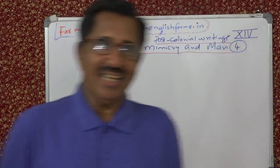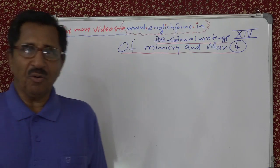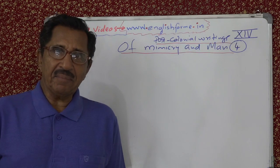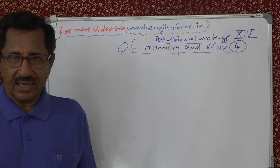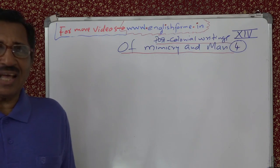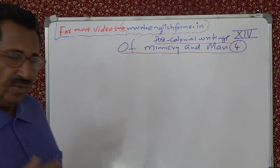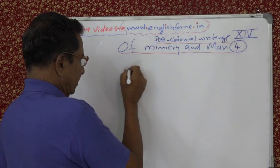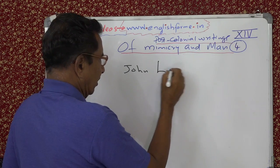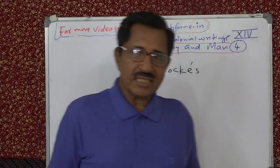Hello friends. So, 'Of Mimicry and Man' by Homi K. Bhabha. We have seen that the ambivalence — the two classic texts that proclaim the ambivalence of colonial mimicry. The first one is John Locke, the philosopher. John Locke's definition of slave, we have already seen that.